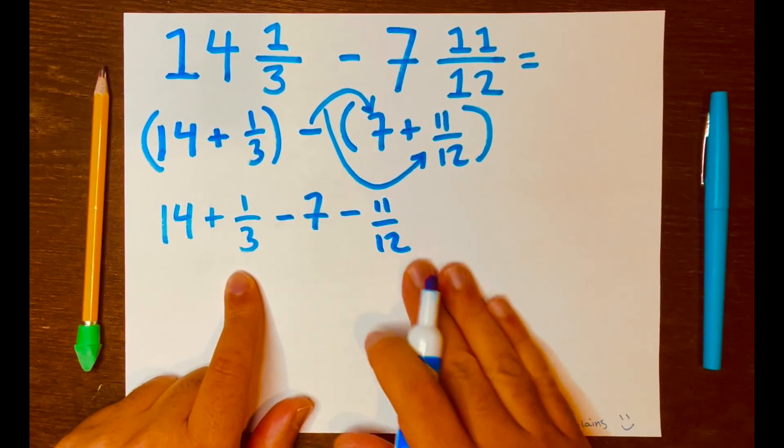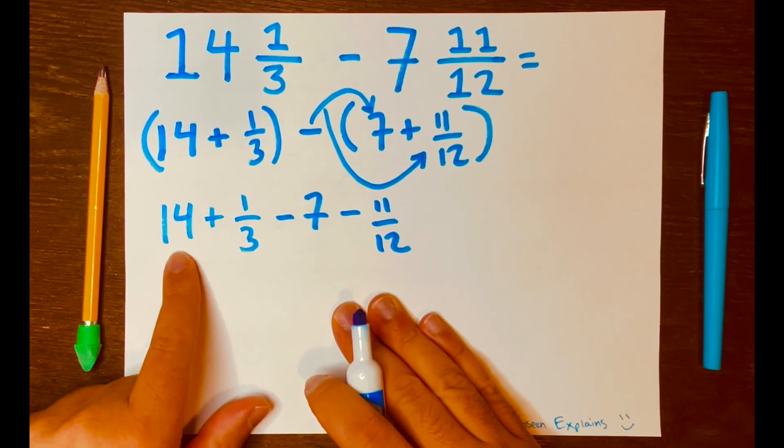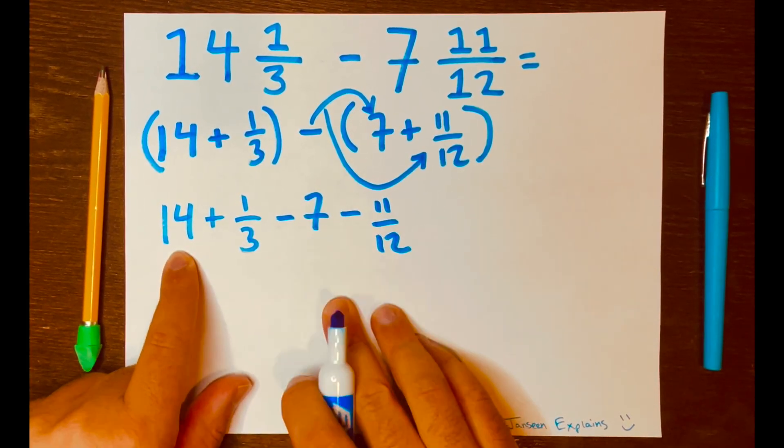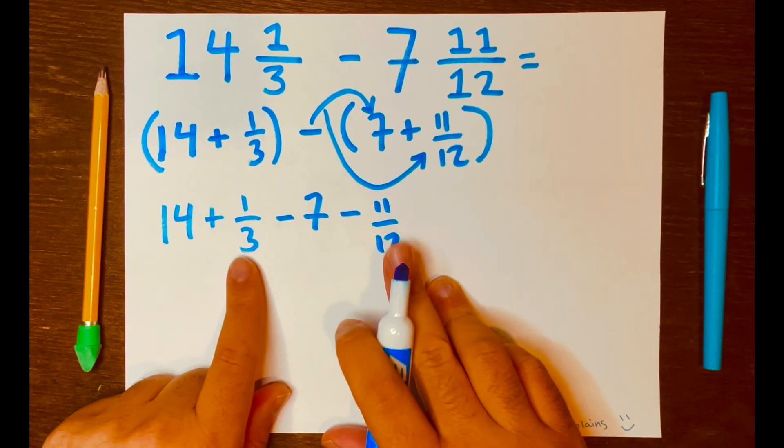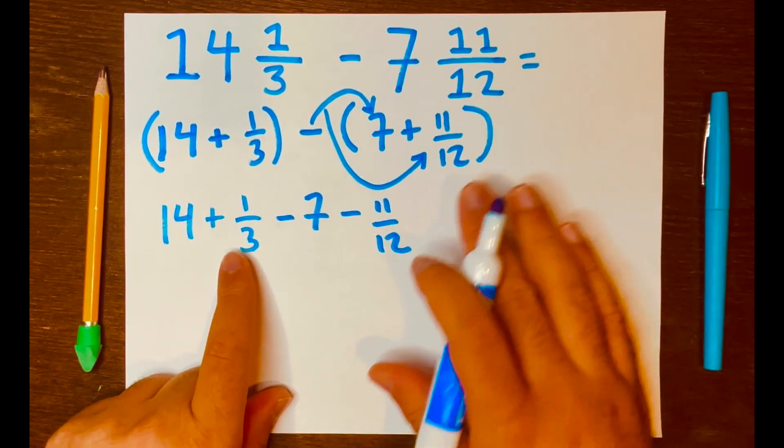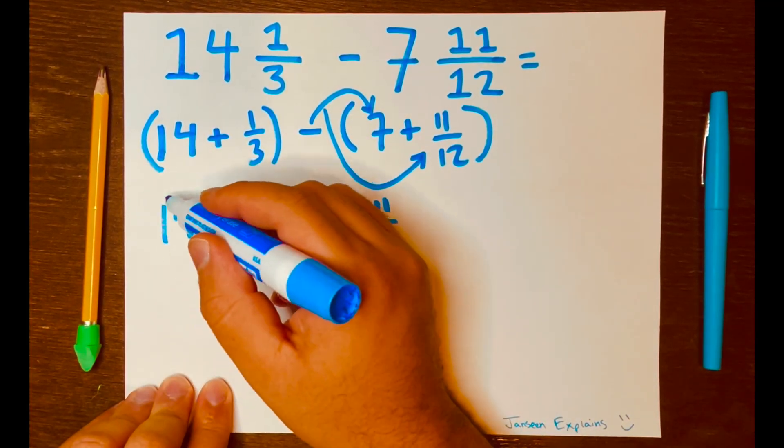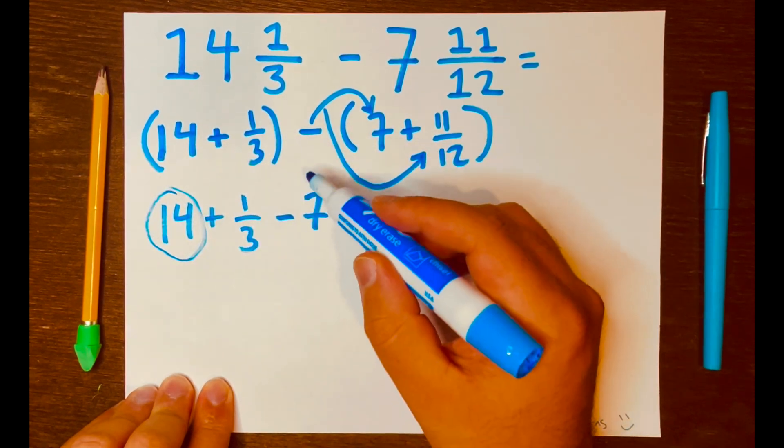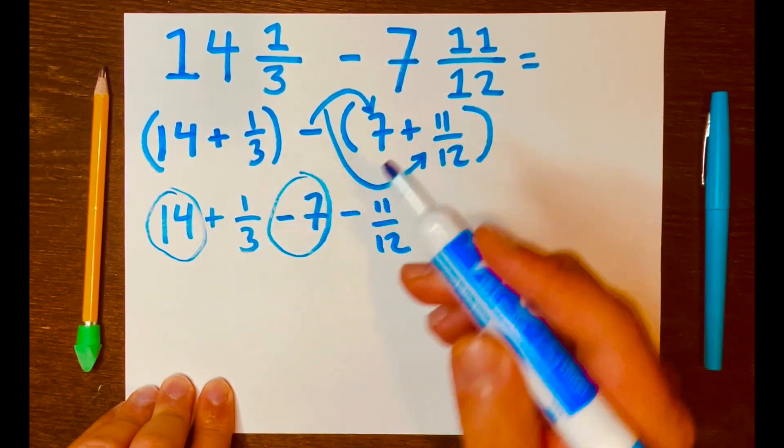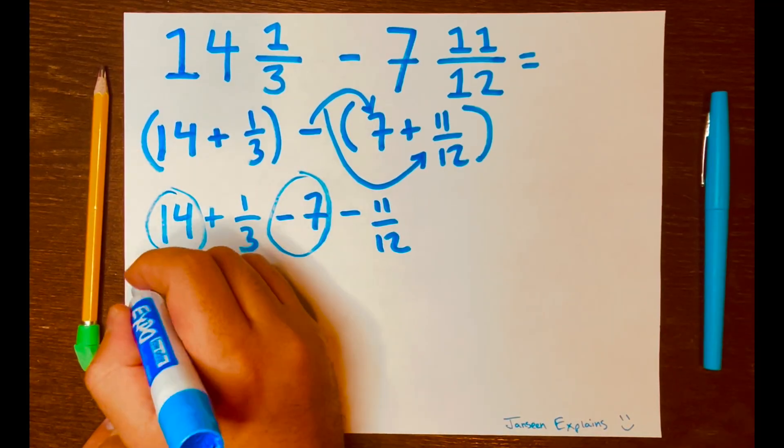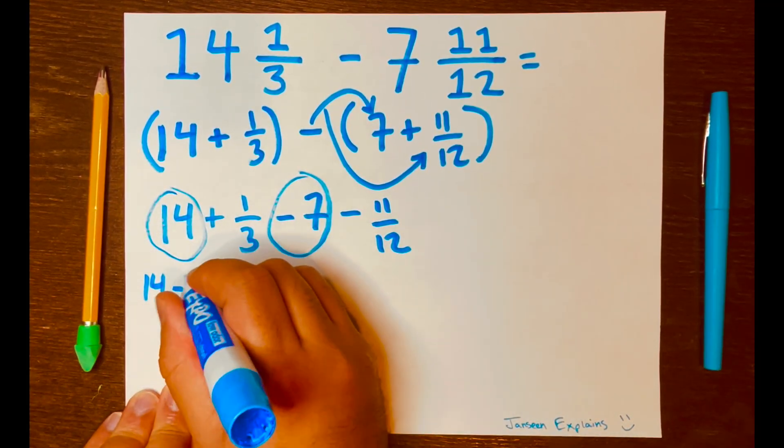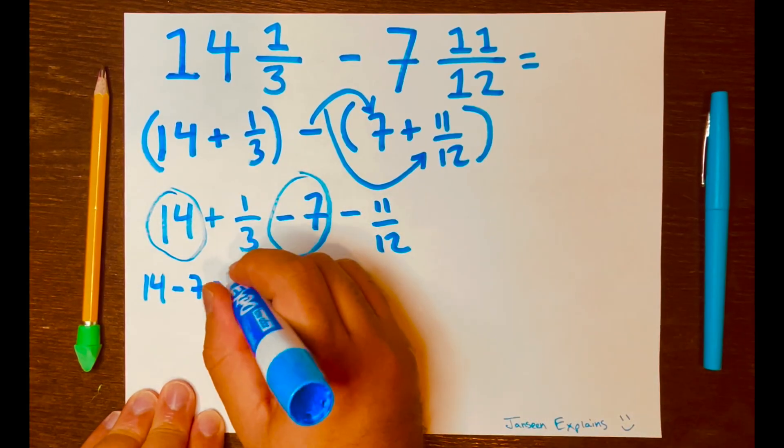And that way, we can just group the whole numbers and the fractions, and that way we are not dealing with parentheses. So, 14 minus 7, so I'll write it here, 14 minus 7, equals 7.